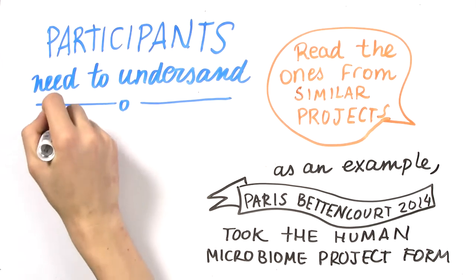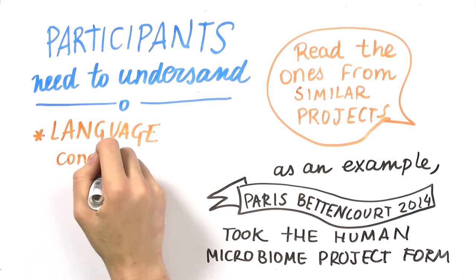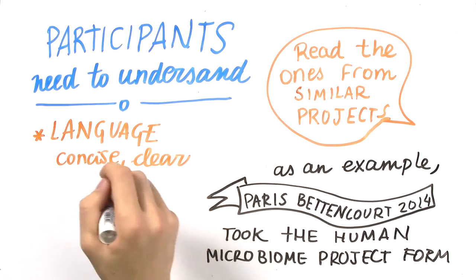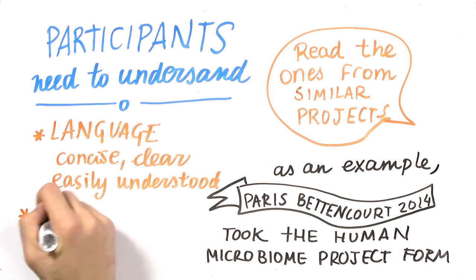The most important and challenging part of a consent form is the language, which needs to be concise, clear, and easily understood. For iGEM dreamers who have been working on one specific project for months, certain concepts that are foreign to the public become unbelievably intuitive, which leads to a lack of explanation of certain procedures and purpose in the consent form.